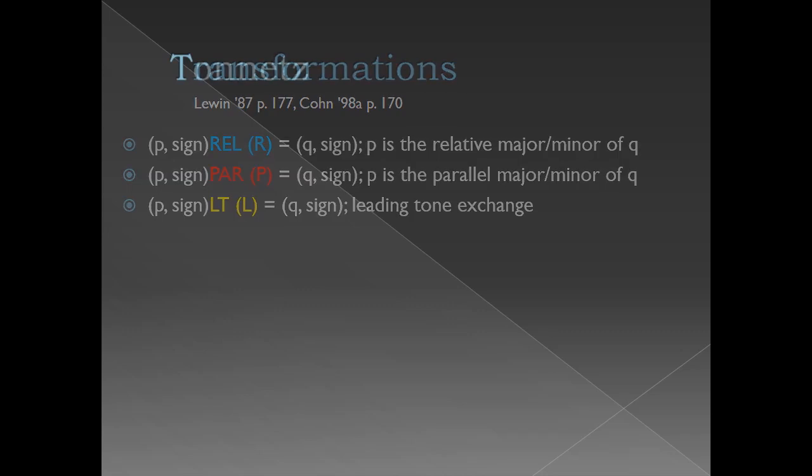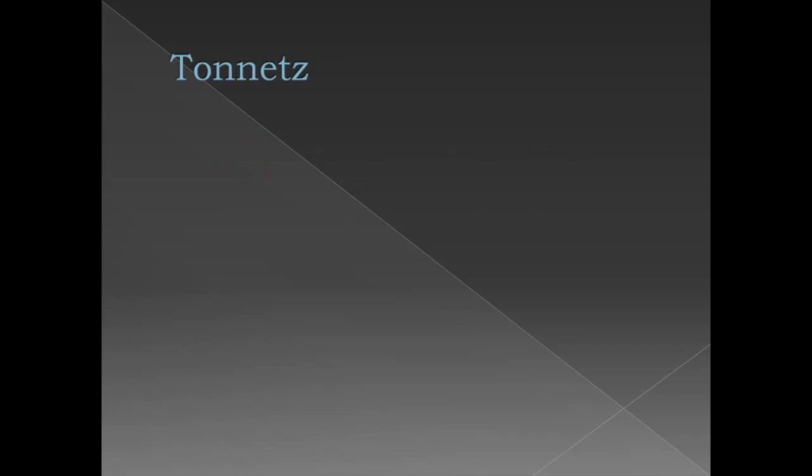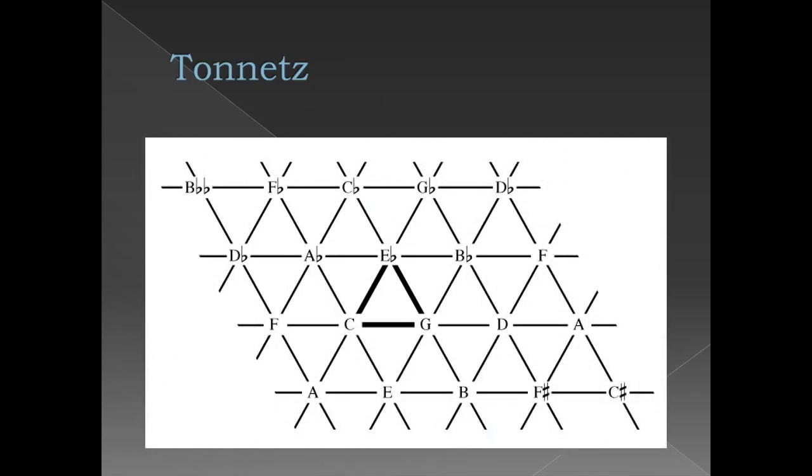One common way that music theorists visualize these transformations is through use of a table of tonal relations, often referred to as a Tonnetz. The Tonnetz appears in several forms, but one of the more common ones is pictured here as an infinitely expanding grid featuring diagonals for major thirds, minor thirds, and perfect fifths.